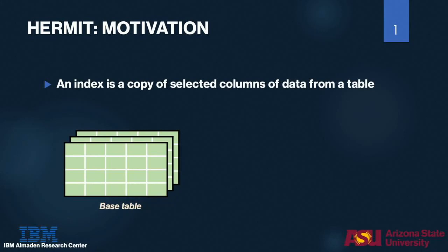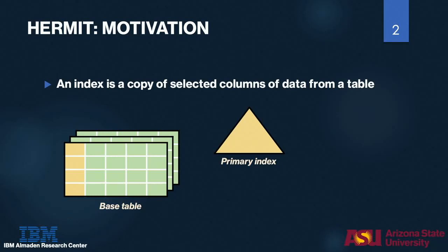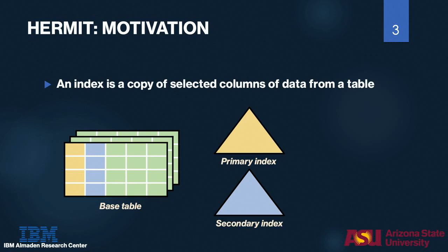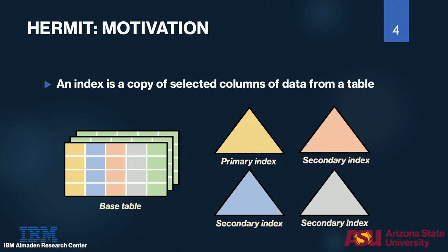Before diving into the details of our HERMIT design, let's review what an index structure is. An index is a copy of selected columns with data in a table. Given such a table with a primary key, you want to build a primary index on the primary key. Based on the query workload, you may want to build secondary indexes on frequently accessed columns. However, the key problem of having so many secondary indexes is that they consume so much memory and disk — we may soon run out.